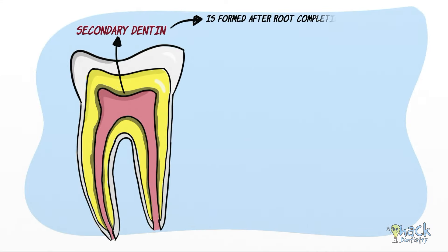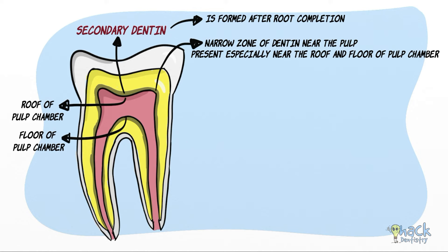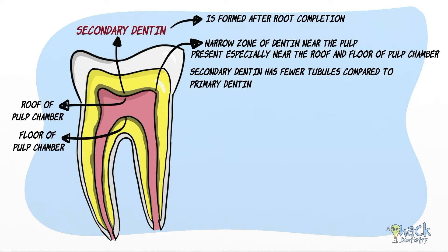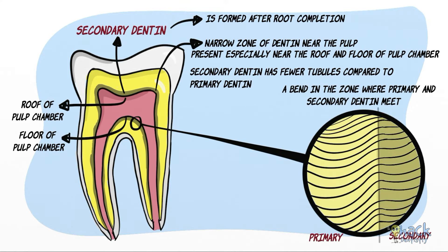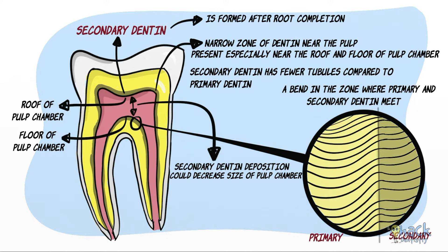Secondary dentine is formed after root completion and is a narrow zone of dentine near the pulp, especially near the roof and floor of the pulp chamber. It appears like primary dentine though it contains fewer but regularly arranged tubules. There is a characteristic bend in the zone where the primary and secondary dentine meet. Deposition of secondary dentine near the roof and floor of the pulp chamber can cause a reduction in the size of the pulp chamber, known as pulp recession.